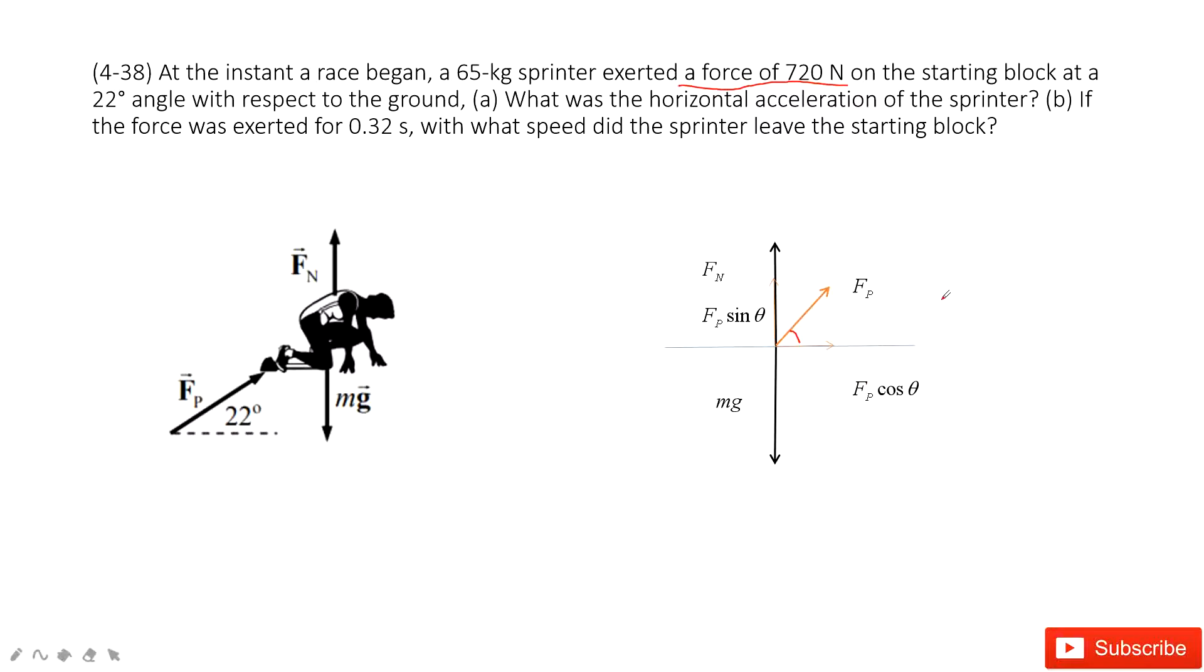Therefore, we can consider Newton's second law. First thing we consider is the vertical direction. In the vertical direction, this person is stationary because he didn't jump up or move down.